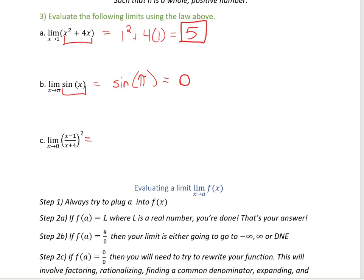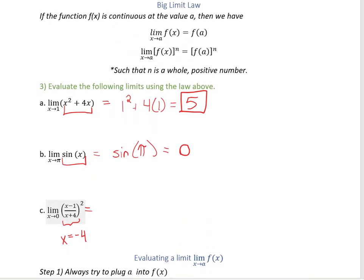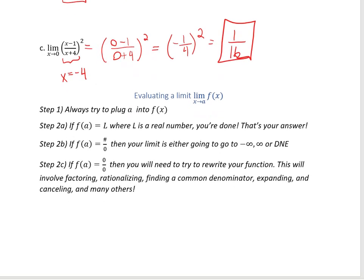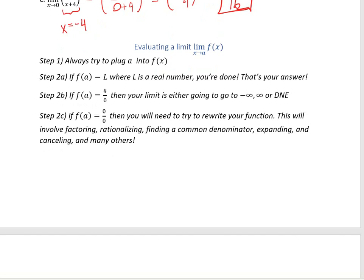For the next one, we have (x − 1)/(x + 4)² as x approaches 0. This function is continuous everywhere except when x = −4. That's worrisome, but our function just has to be continuous near that value — 0 isn't close enough to −4 to make us worried. So let's go ahead and plug in 0: (0 − 1)/(0 + 4)² = −1/16. We didn't break any math rules, so we're okay.